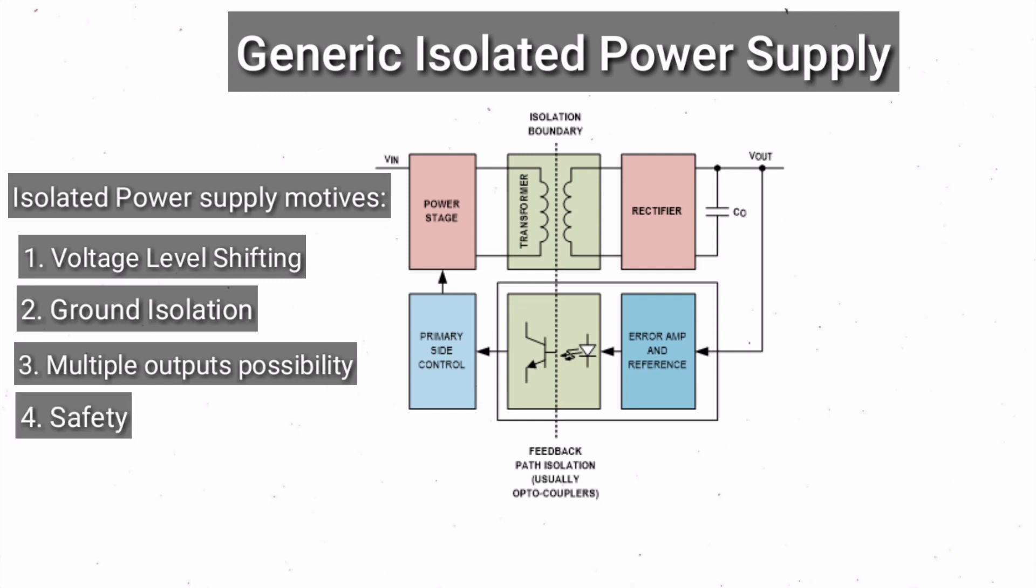Output voltage feedback is required for proper voltage regulation. In conventional isolated power supplies, it is achieved by using a secondary side error amplifier and optocoupler and associated discrete supporting components. These feedback components not only make the power supply design more complex but also increase the bill of material cost and overall size of the solution.